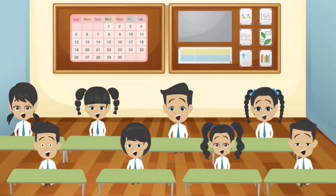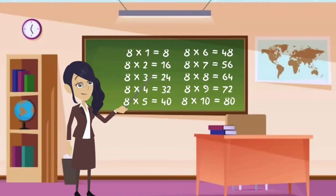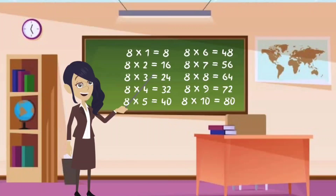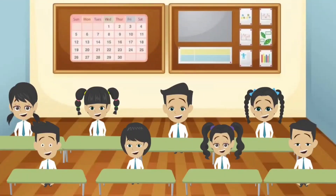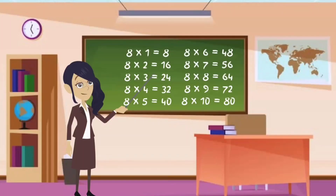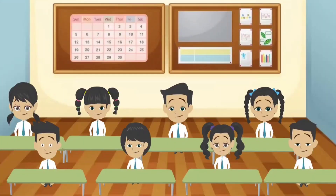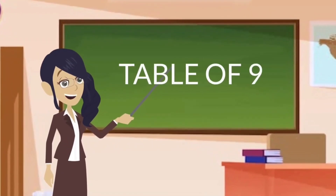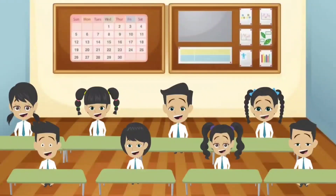Let's do this again together. 8 ones are 8. 8 twos are 16. 8 threes are 24. 8 fours are 32. 8 fives are 40. 8 sixes are 48. 8 sevens are 56. 8 eights are 64. 8 nines are 72. 8 tens are 80.